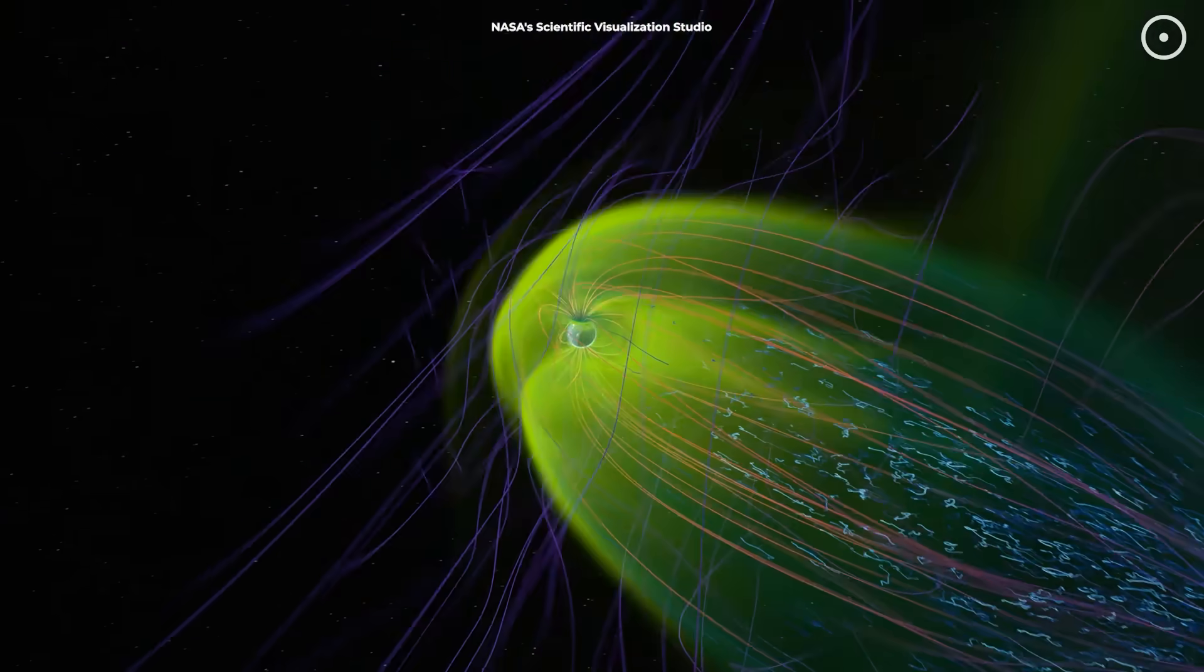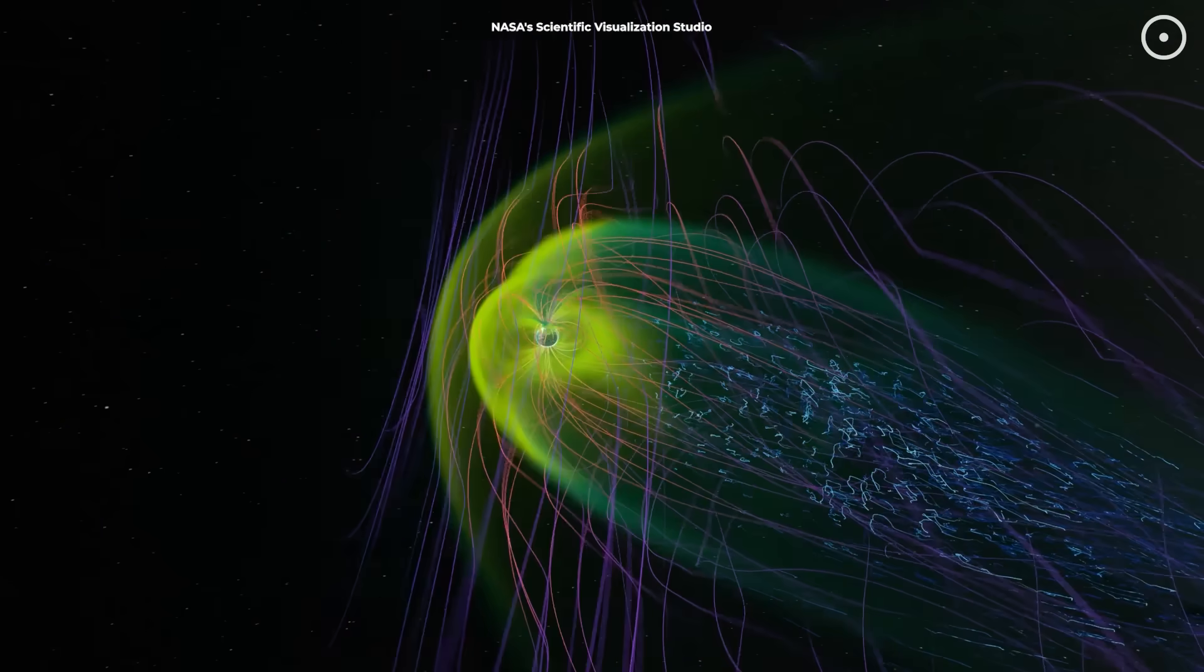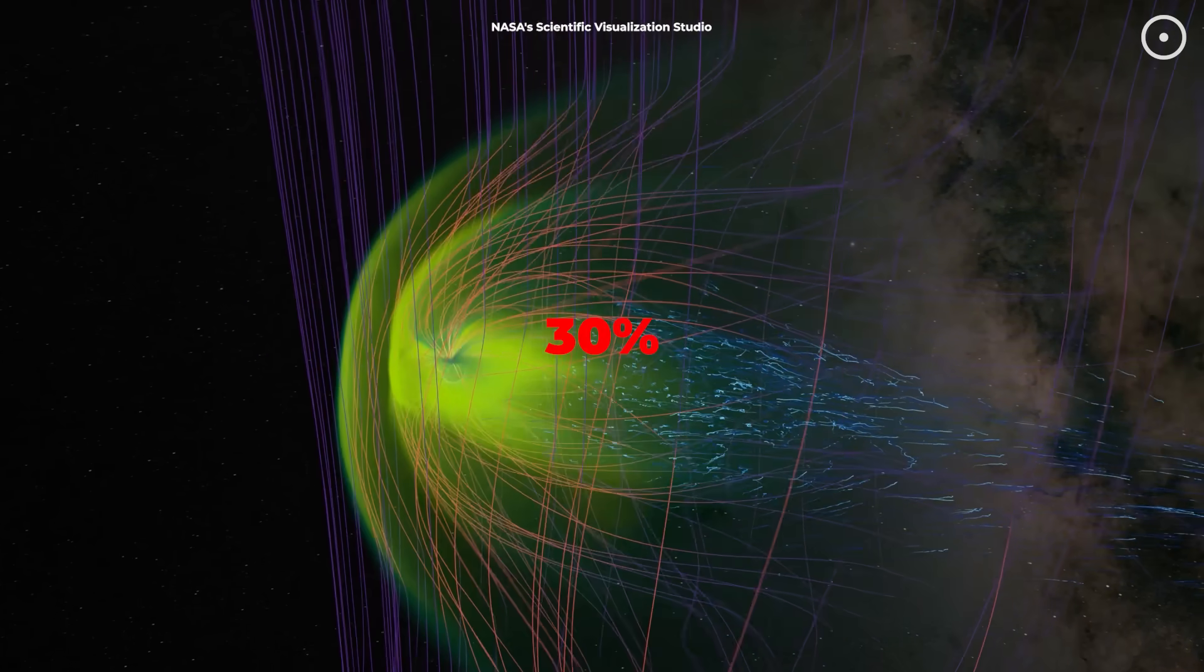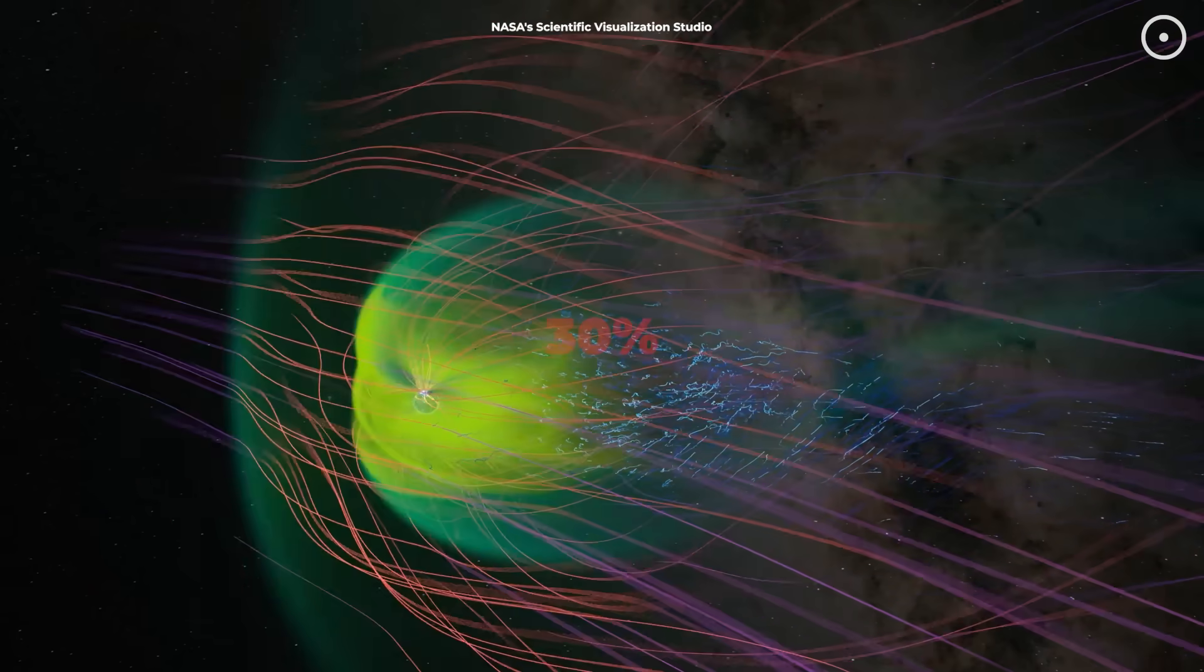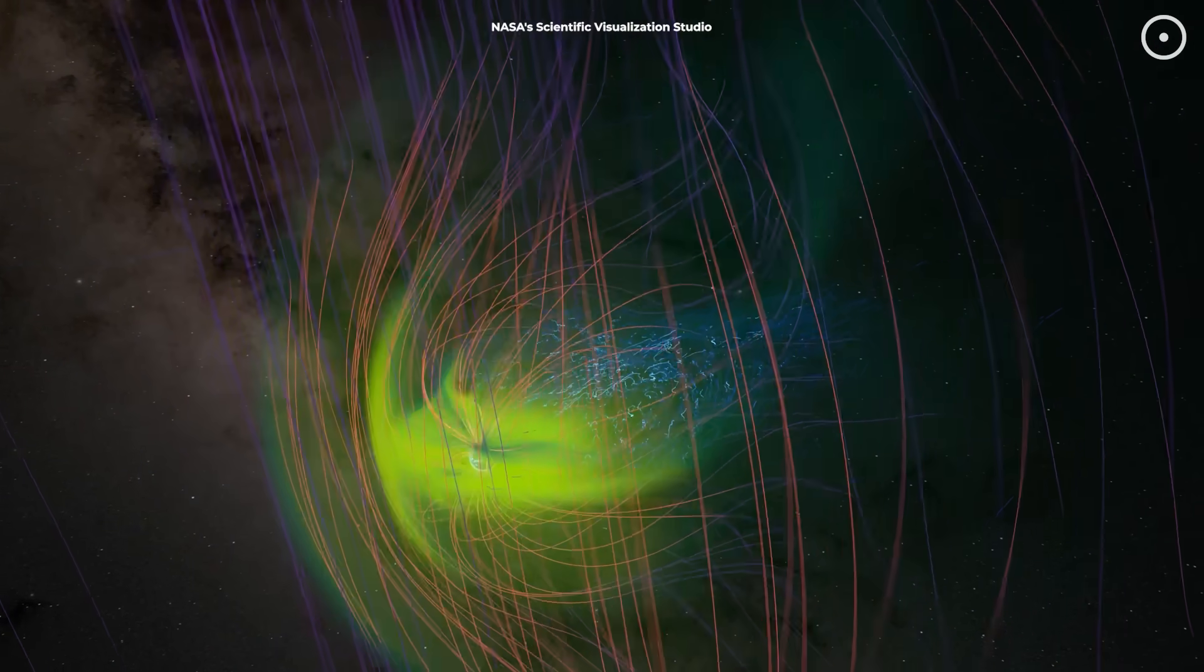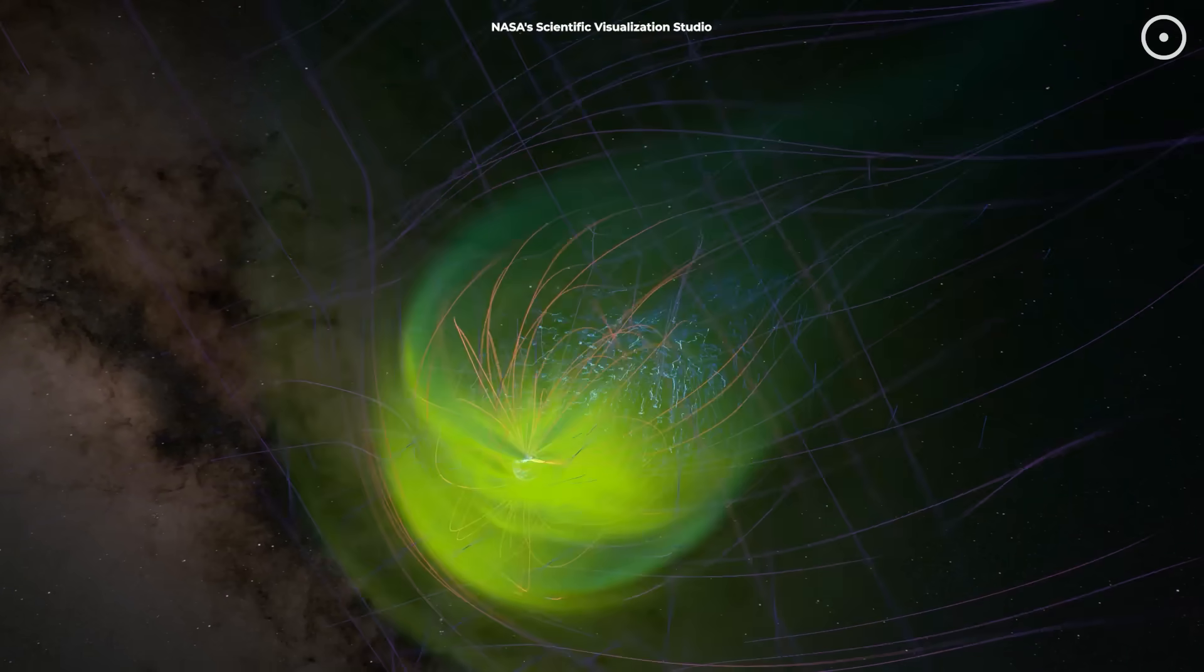Earth's shield is weakening. In the past 3,000 years, our planet's magnetic field has lost about 30% of its strength and it's still dropping. But here's what most people don't know. This might be just the beginning of something much bigger.